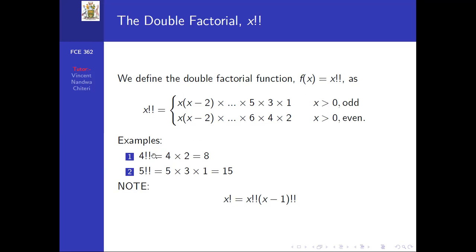For example, 4!! = 4 times 2 = 8, since 4 is even. And 5!! = 5 times 3 times 1 = 15, since 5 is odd, so we use the first formula.